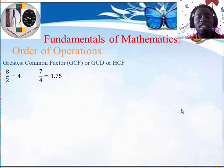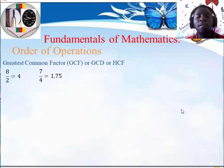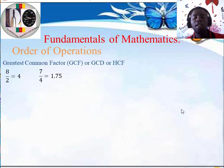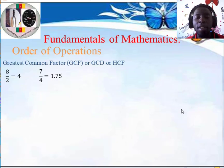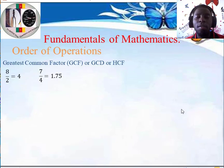What do we mean by greatest? Greatest is simply the highest. When we have two numbers, they might have a common factor, but some of the factors may be small, medium, and some will be bigger. So when we talk about greatest common factor, we pick a factor from the factors that are common between the two numbers, and we pick the greatest common amongst them.